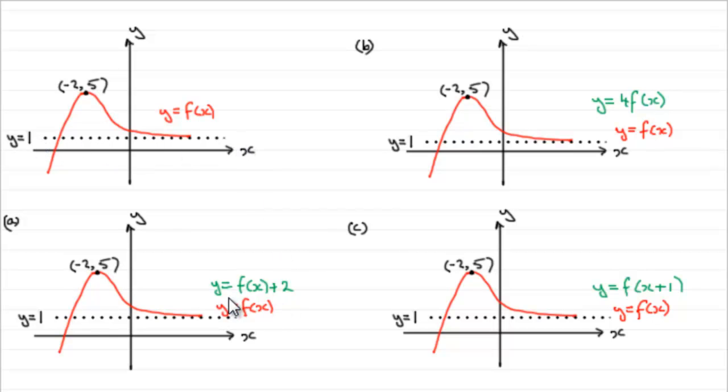We've got to sketch these other graphs that I've written in green: y equals f of x then plus 2, y equals 4f of x, and y equals f of all of x plus 1. Now this question is based on transformations of graphs, and if you're not sure about transformations of graphs, just go on my website, look in the index under transformations of graphs, and you'll see these explained in more detail.